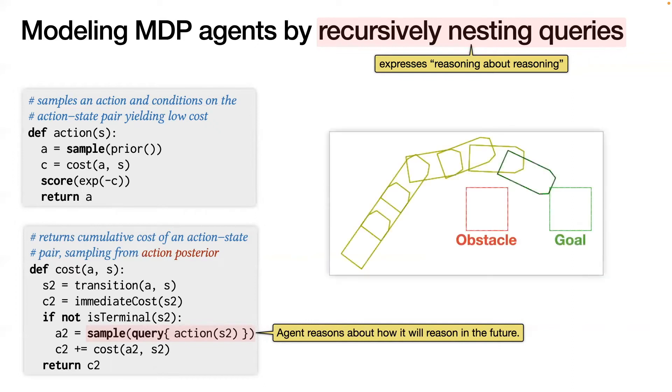We can instantiate this MDP encoding on the problem of two-dimensional path planning. Here we have a robot whose constraint is to navigate to the goal region while also avoiding the obstacle. Applying Bayesian inference to this program, it automatically searches for a distribution of paths that meet the constraint.